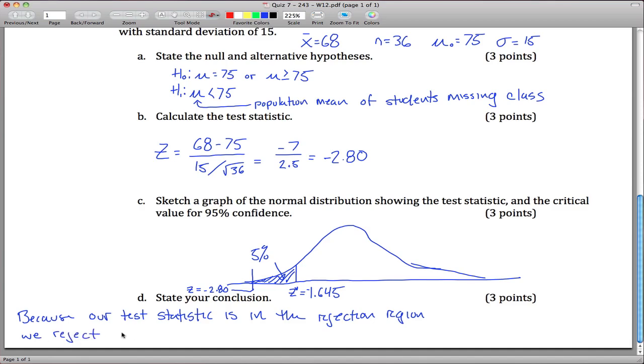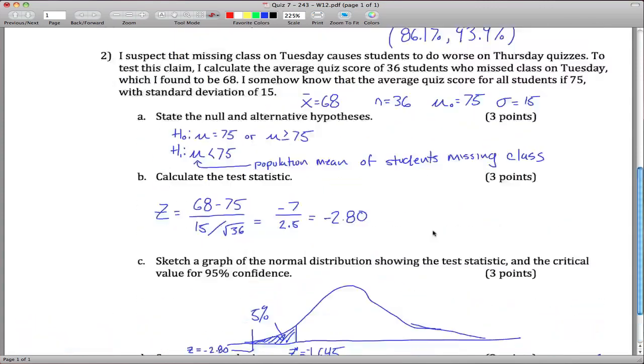If you're in the rejection region, you reject the null hypothesis and conclude that missing class adversely affects quiz scores or something like that. Missed class, you do worse on the quiz. That's the end of your conclusion and the end of the quiz.